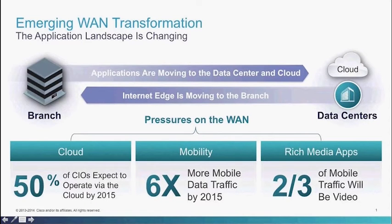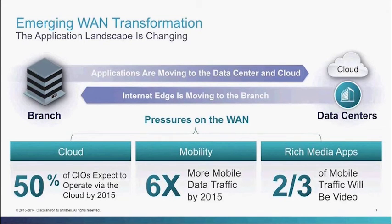In today's WAN there's an emerging transformation happening. The application landscape is changing from the traditional perspective of applications being run from the data center and accessed at branch locations. Now applications are sometimes distributed — either in the branch, in the cloud, or in the data center. At the same time, internet access is increasingly happening from the branch, driven by cloud applications, SaaS, mobility, guest Wi-Fi, and mobile data traffic.